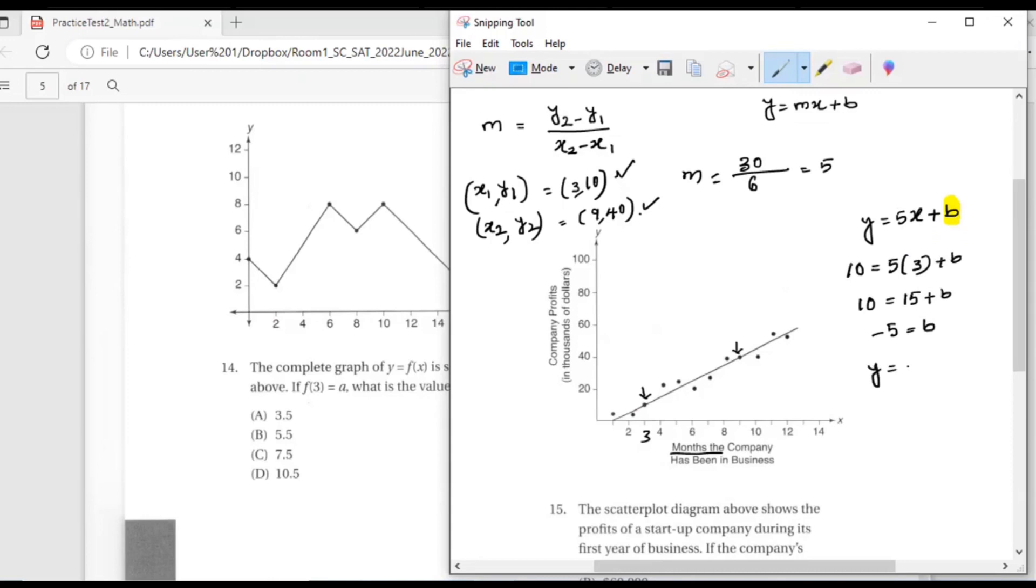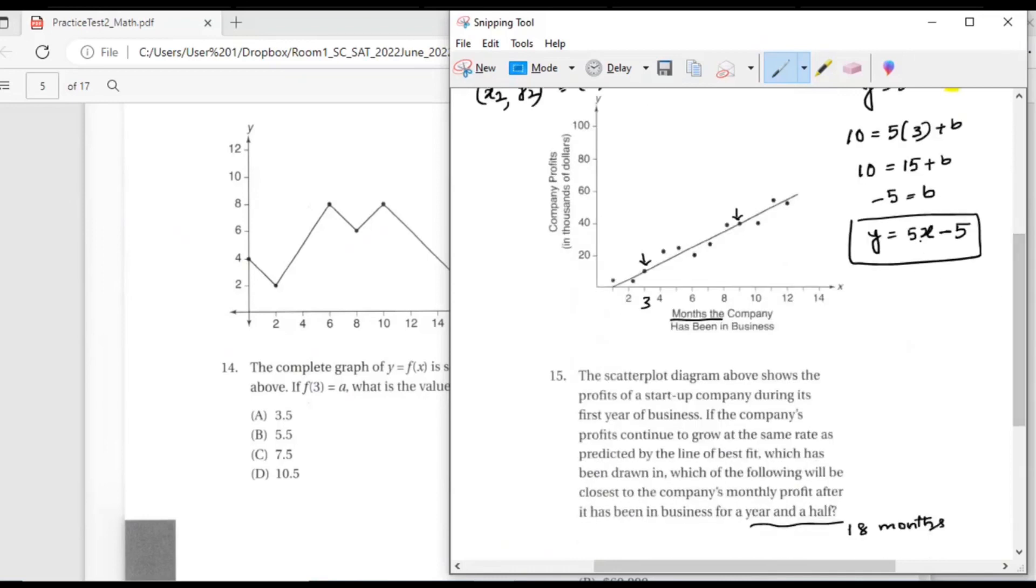y equals 5x minus 5. That is how you can figure out the equation of a line consistently every time. Pick the two points that the line is passing through, figure out the slope, and then figure out the y-intercept. Once you have a line, you can use it for prediction. The question is asking, what is the y value, which means the company profit, when x is 18 months?